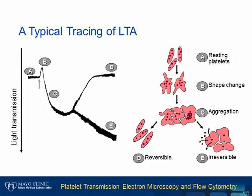Here is an example of the platelet aggregation tracing. It includes an initial baseline (A), a spike of increased turbidity due to platelet shape change (B), the first wave of platelet aggregation (C), and second wave of aggregation (E). Sometimes the first wave of aggregation is reversible (D), while the second wave of aggregation is usually irreversible.